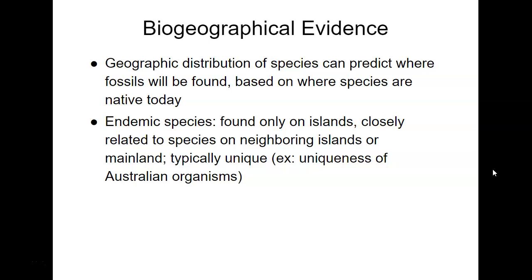Biogeographical evidence is the last part of evidence for evolution. This is looking at biological diversity across different geographical locations. The Galapagos finches are a classic example — spread across different islands, you can see how related they are. It has to do with the distribution of species and where they might have been found or where they are today. A lot of Australian organisms, for example, are very unique to Australia. That concludes biogeographical evidence and the total evidence for evolution.